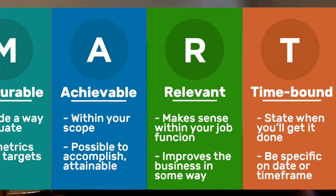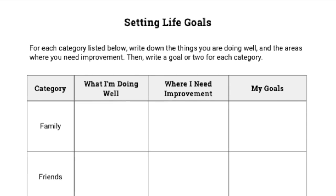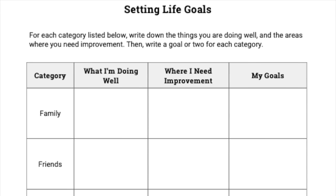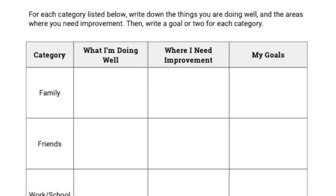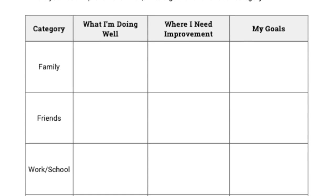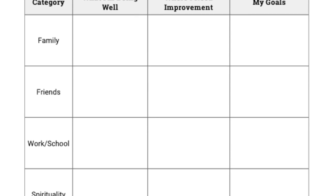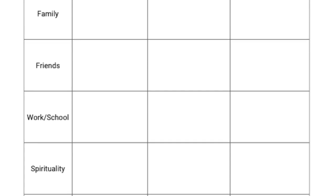For our younger kids, attached you will find a worksheet called 'Setting Life Goals.' This is something simple for elementary-age students. We have different categories: family, friends, work, school, spirituality, body, and mental health. For each category: What do they feel they're doing well? What do they feel they need to improve? And what is one goal they want to set in that category? For family, for example: What are you doing well with your family? What could you improve in your family relationships? Then set a simple SMART goal you know you'll be able to achieve.